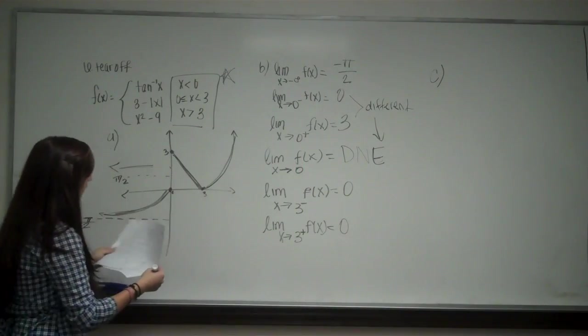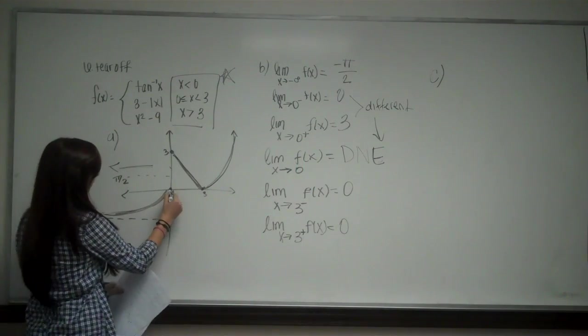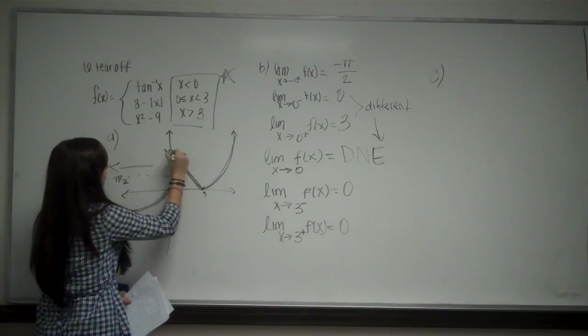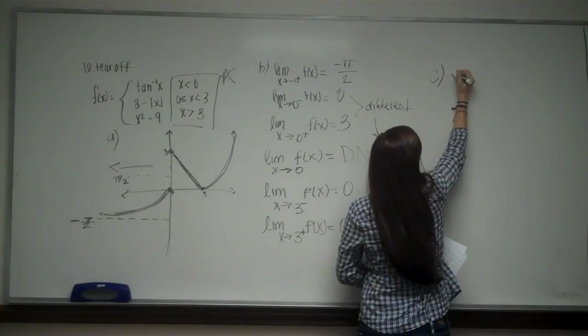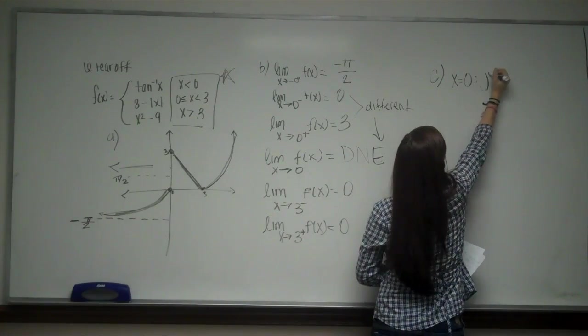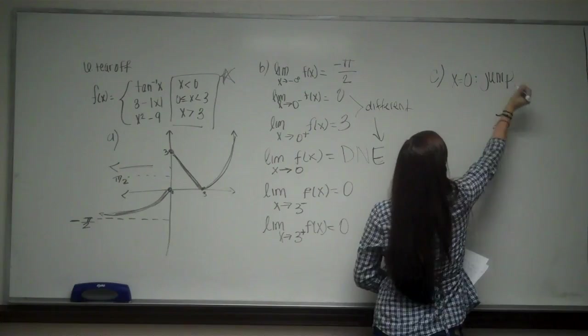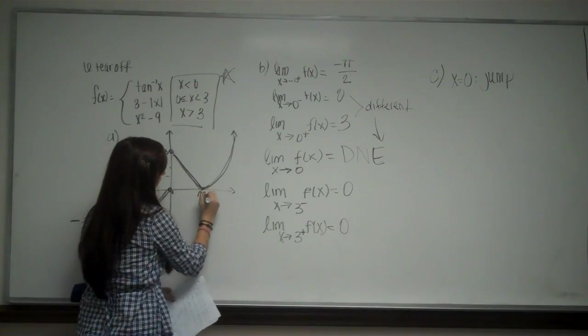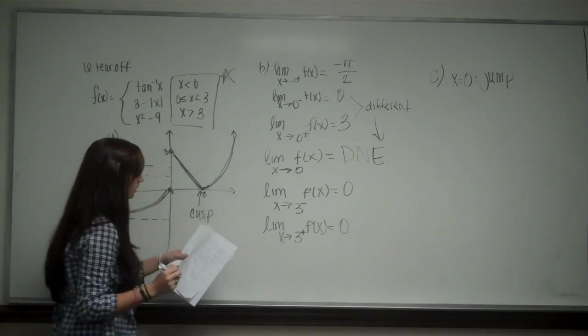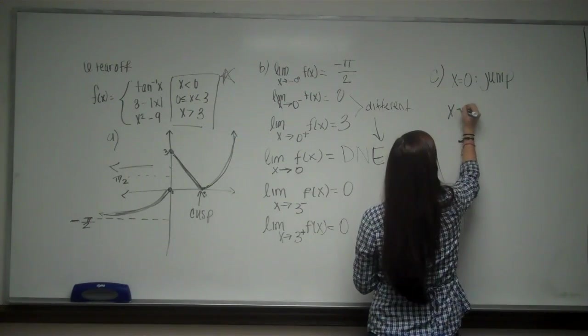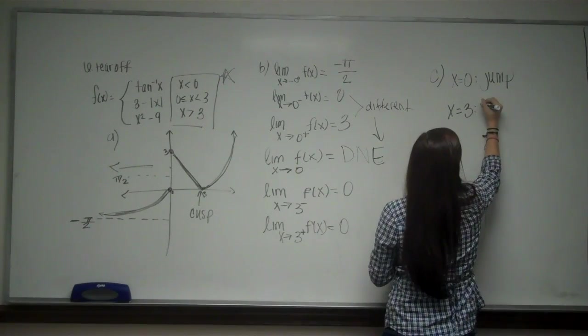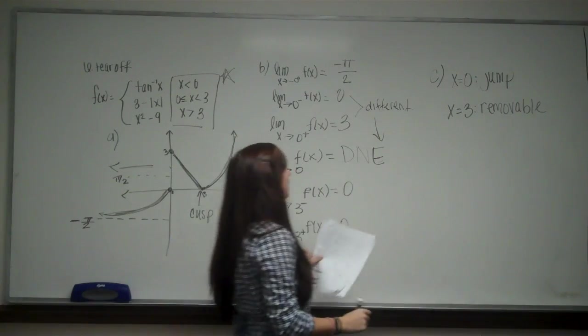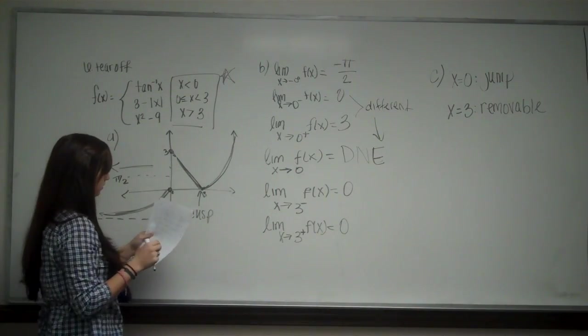So we're going to look at our graph for our discontinuities. And here we see a discontinuity right away and it's going to be a jump because there's one point here and then it jumps up to there. So that is at x equals 0, we have a jump. And then we look again, another discontinuity, a cusp, right? So right here is a cusp. So x equals 3, but that is going to be a removable. Remember that we cannot remove jumps.